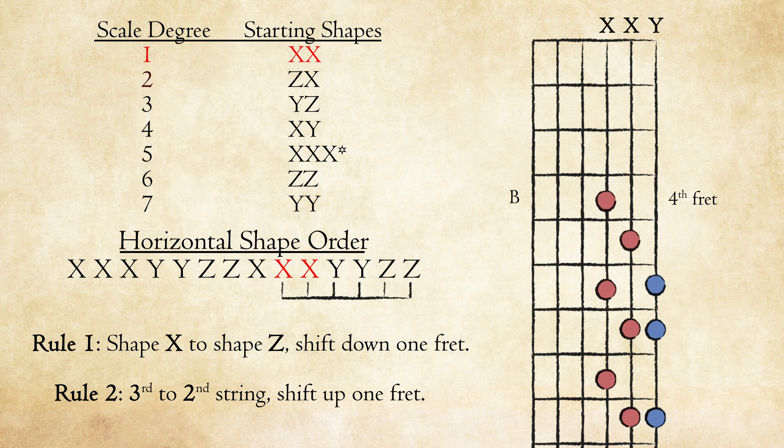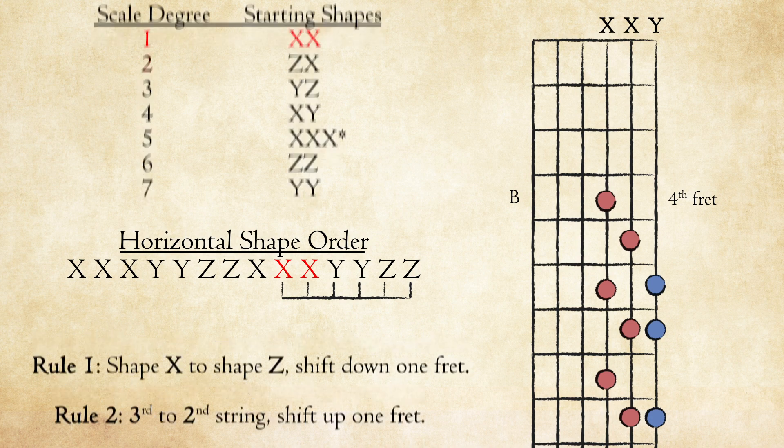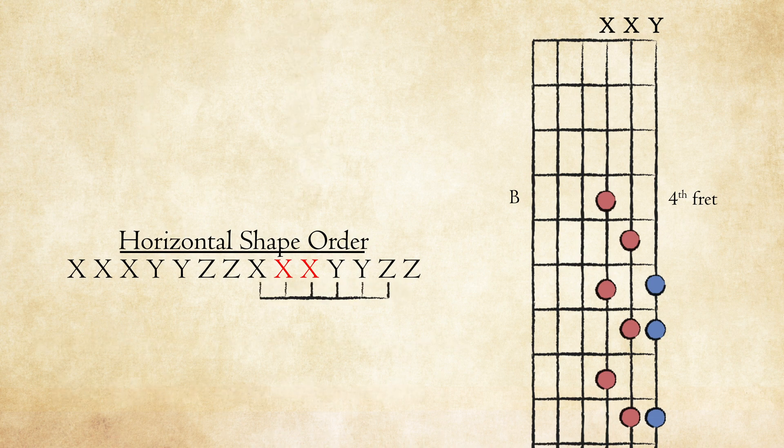In this case, we can see we started it with two X shapes, which are the starting shapes for pattern 1. We can use these two shapes as our reference to build the pattern backwards.